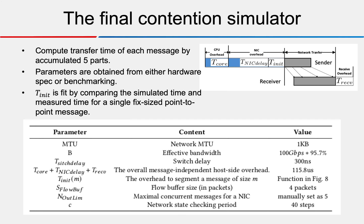The final contention simulator computes the transfer time of each message from five components: the CPU overhead, the NIC overhead, the transfer time, the receive overhead, and the NIC delay. The simulator has parameters including MTU, effective link bandwidth, switch delay, overhead of message segmentation, flow buffer size, concurrent messages per NIC, and the network state checking criteria. The message-independent host-side overhead and segmentation overhead are calibrated by comparing simulator output against measured results from point-to-point benchmarks.